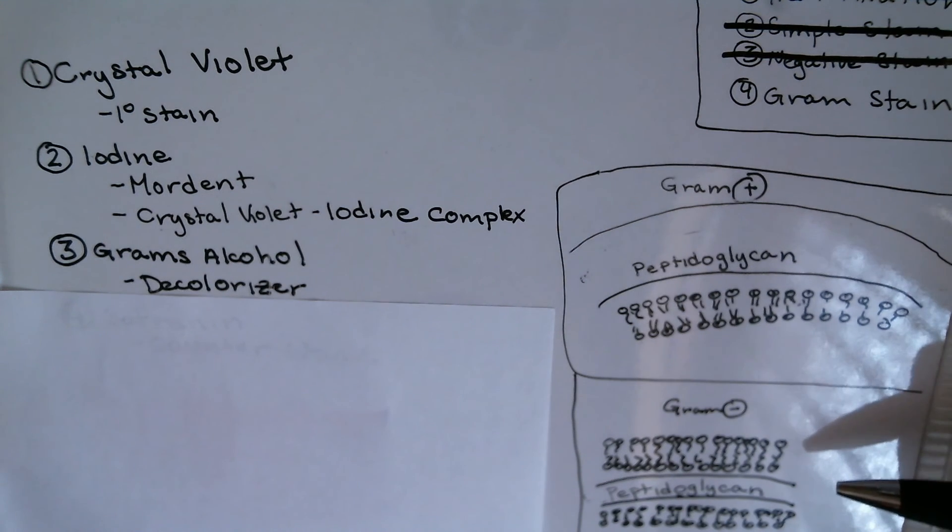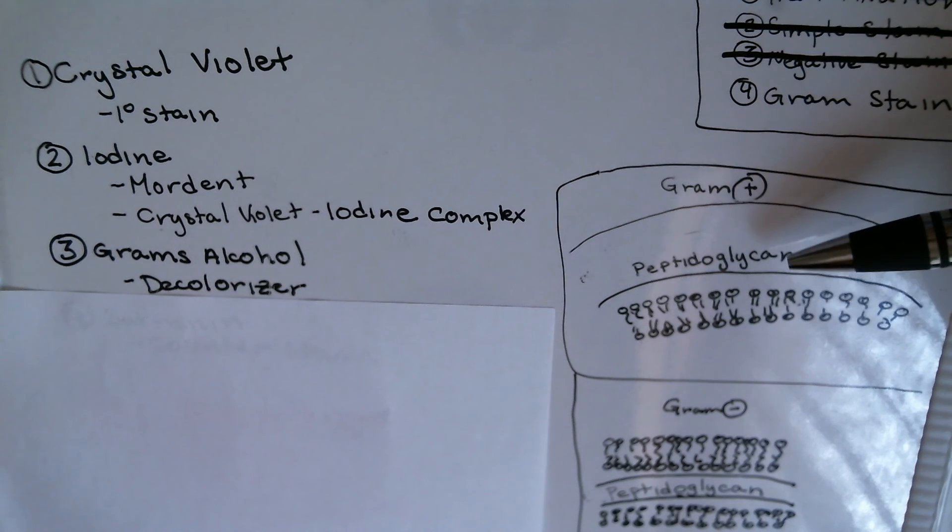However, the lipids in the gram-positive cell are protected by the thick peptidoglycan layer, and even though some of it is squeezed out, it does not become as porous as a gram-negative cell, so it would retain the primary stain.